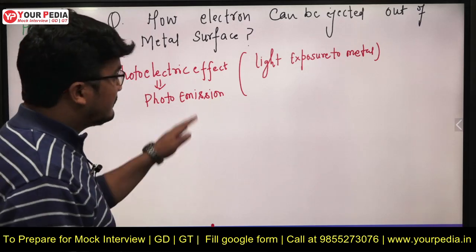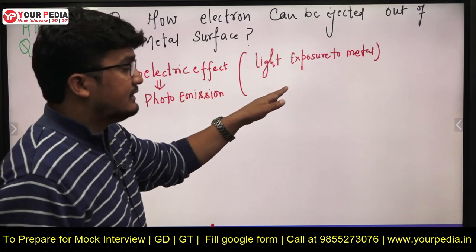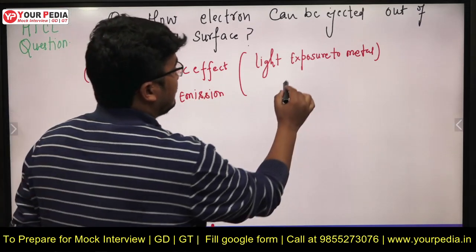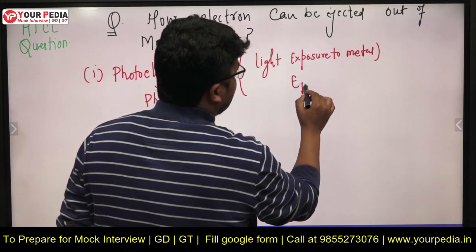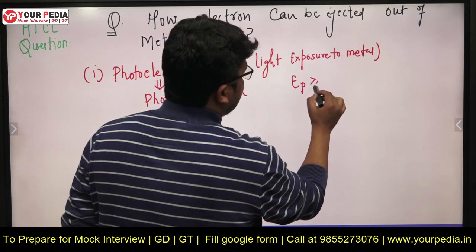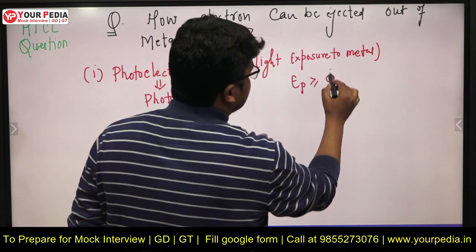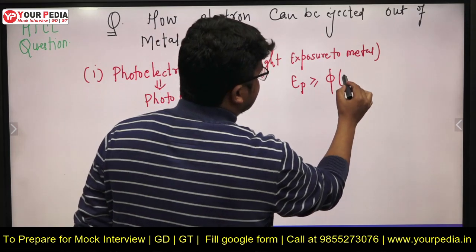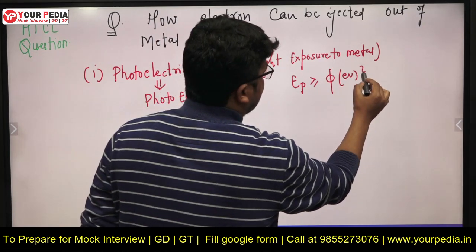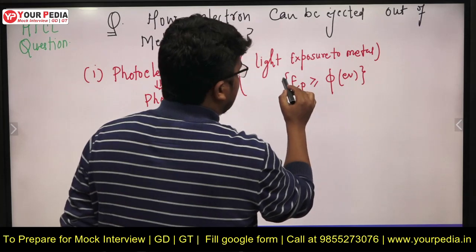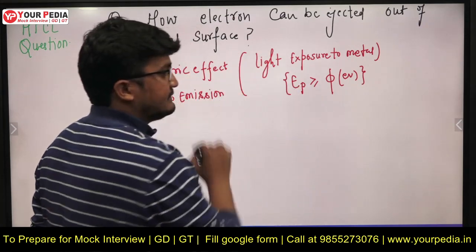I will not go into detail here. For photoelectric emission to happen, the photon energy should be at least greater than or equal to the work function, which is measured in electron volts.